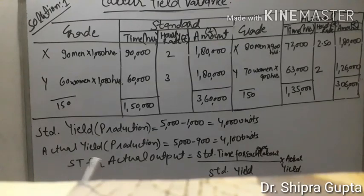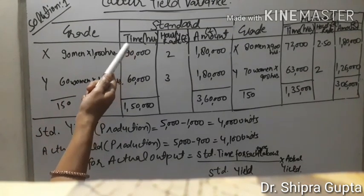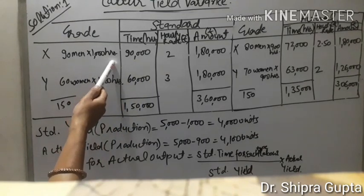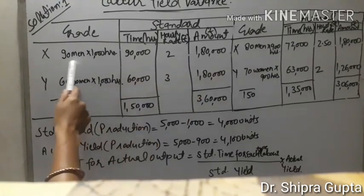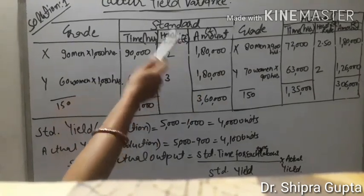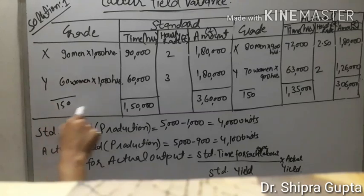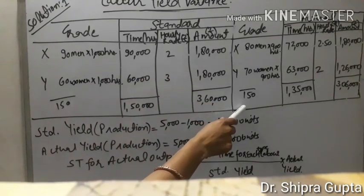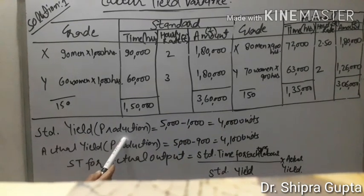We will maintain a table by the given data. 90 men given for standard data, 1000 hours for budgeted data, and 900 hours for actual data. Using these, we will maintain the table. Total labors are 150 in standard and 150 for actual.